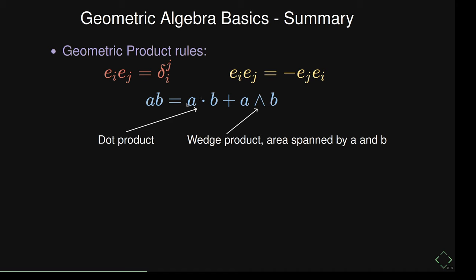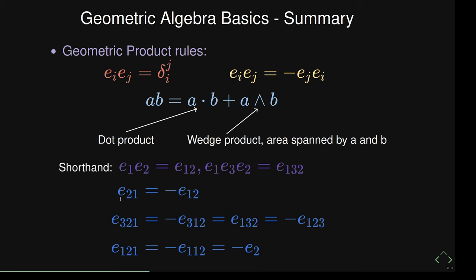If you multiply two vectors with this product, you get one part like the dot product and another part that is the wedge product. You can write E1·E2 as E12 in shorthand, and similarly E1·E3·E2 as E132. For example, E21 can be rewritten as −E12 by swapping. E321 can be simplified by swapping three times, each time picking up a minus sign. And E121: applying the second rule gives −E112, then the first rule gives −E2.